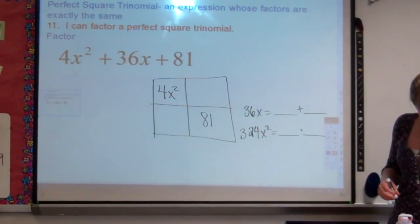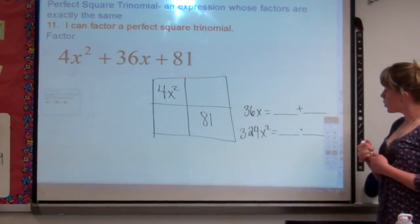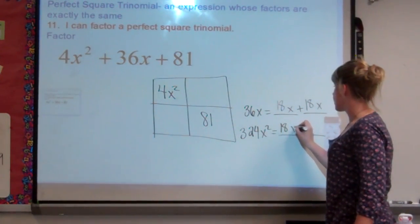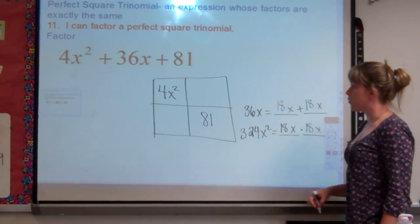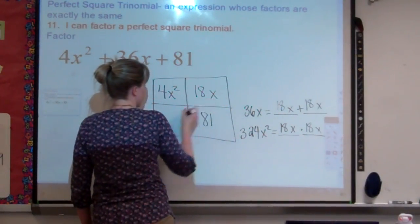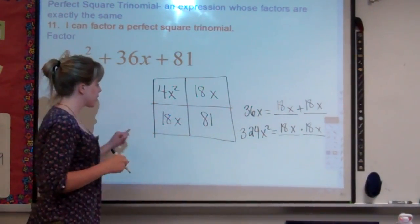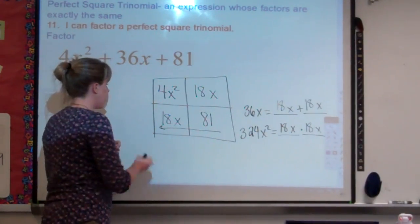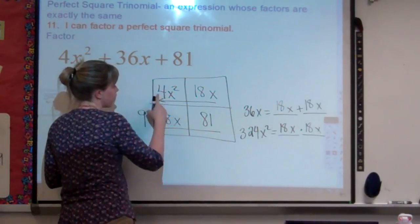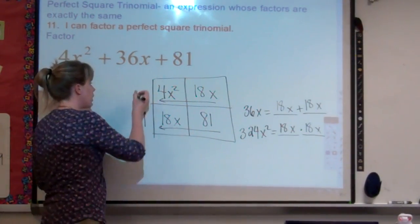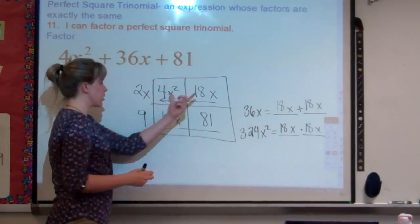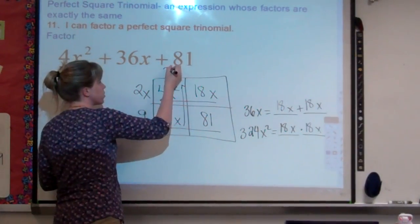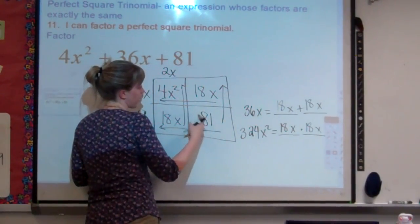These two numbers are 18 and 18. 18 plus 18 is 36, and 18 times 18 is 324. So we can go ahead and put 18 in the box. Going across, we look for the greatest common factor that goes into both 81 and 18 — in this case it's 9. Going the other way, the greatest common factor that goes into both 4x squared and 18 is 2x. Going up, the greatest common factor that goes into 4x squared and 18x is 2x, and into 18x and 81 is 9.